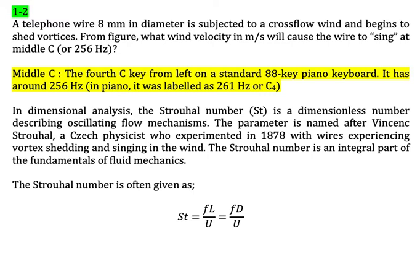For question number two, a telephone wire 8mm in diameter is subjected to a cross-flow wind and begins to shed vortices. From the figure, what wind velocity in meters per second will cause the wire to sing at middle C, or 256 Hz?